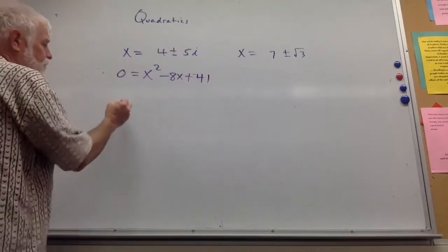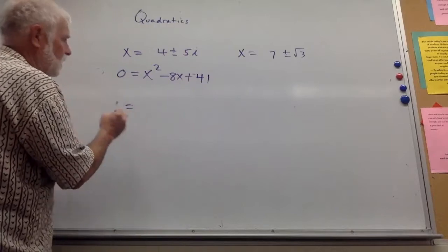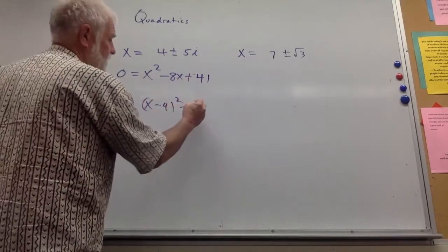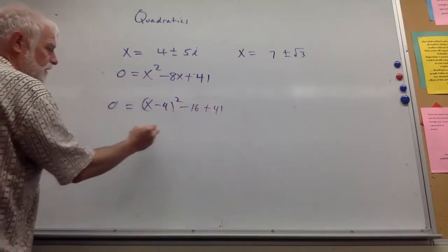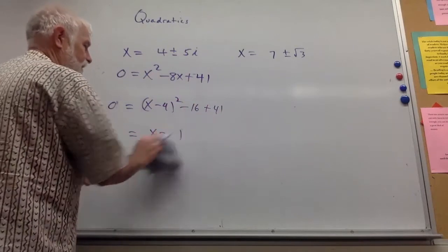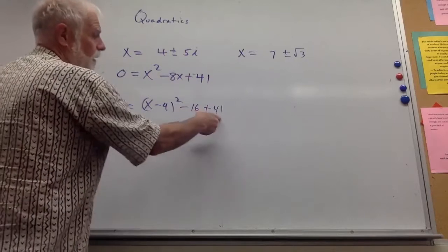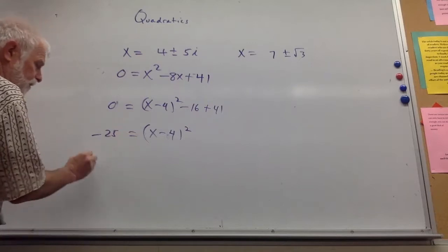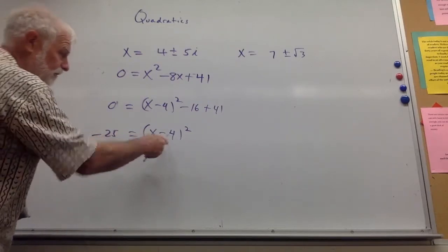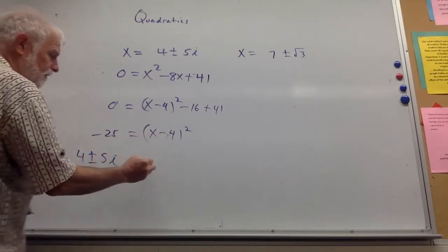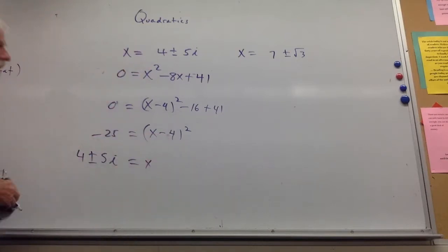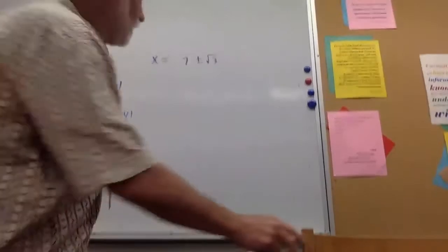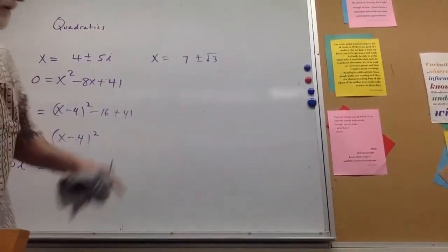It doesn't hurt to have students prove that to themselves. So 0 = x - 4 squared minus 16 plus 41, which gets us x - 4 squared, that's positive 25, so it's -25 on this side. You can see where this is going. So you take the ± square root of that, which is the 5i, and bring the four over, and there you have it.